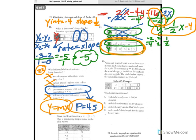Alright, number 23 says, Aisha and Gabriel both sew to earn extra money. Each charge an hourly rate for the job. The equation y equals 1750x shows the total charge that Aisha does for a sewing job. So, her total charge is 1750.